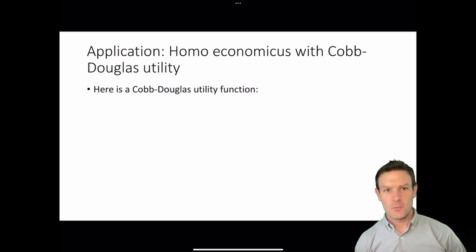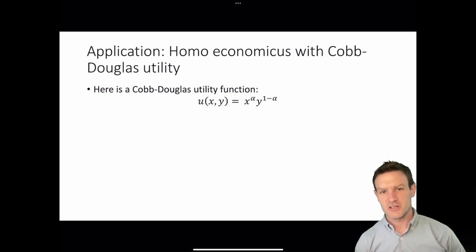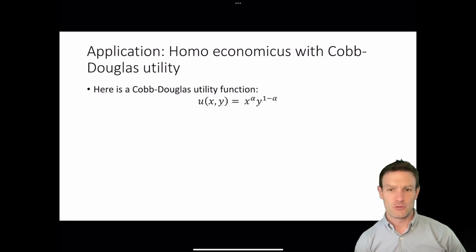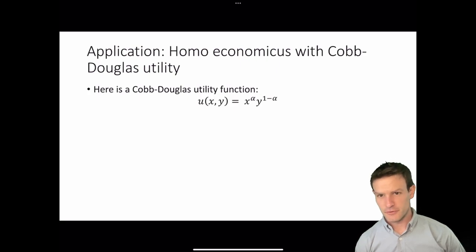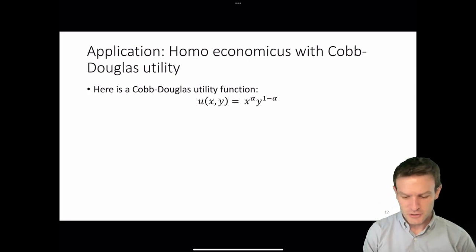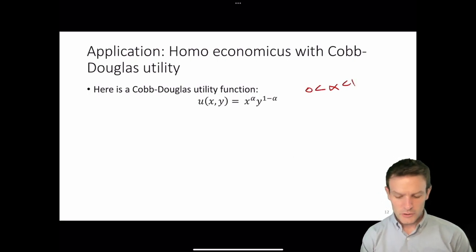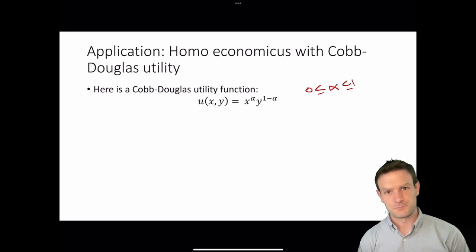When we think about the Cobb-Douglas utility function, it takes two arguments x and y, raises x to the power alpha, and y to the power one minus alpha. We also remind ourselves that alpha satisfies zero less than alpha less than one — or making those weak inequalities, zero less than or equal to alpha less than or equal to one.